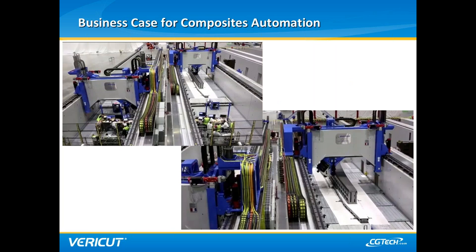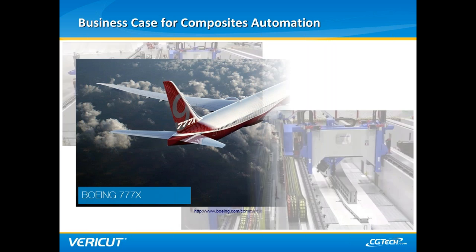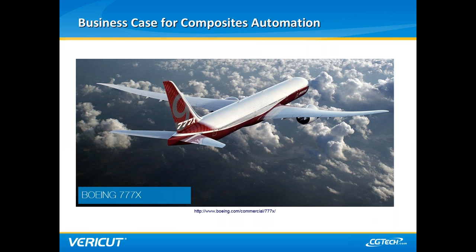One reason companies consider ACM is the impressive ability to lay down extensive amounts of material on a form at a rapid rate. One of the most obvious reasons Boeing chose to build the front and rear spars of the 777X wing with ACM instead of hand layup is the massive 236-foot wingspan, which represents a massive undertaking. By utilizing the strengths of AFP, Boeing designed and initiated efforts to accomplish this monumental feat, understanding that ACM is financially superior in the long term.